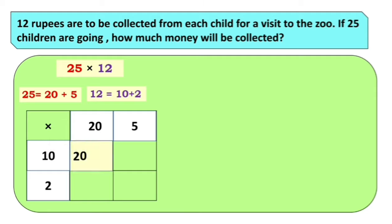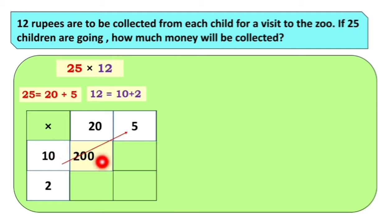1 × 2 za 2, aani 1, 0 from this 20 and next 1, 0 from this 10. So 10 × 20 za 200. Aplella answer kai: 10 × 20 za 200. Aani aata aplella kai karaije aahe — ya 10 ne ya 5 la multiply karaije. So ithe suddha 10 cha unit place var 0 aahe. 1 × 5 za 5, aplella ithe write karaije, aani 1, 0 fakt ithe. So 10 × 50 za 50.